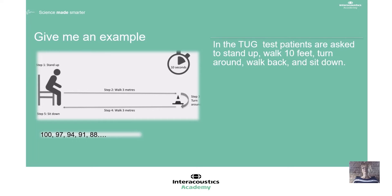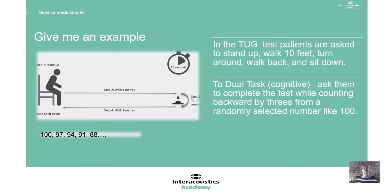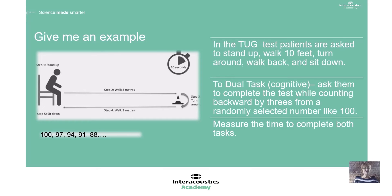Let me give you a quick example of what a dual task might be. In the TUG test — the Timed Up and Go test — the patient is asked to stand up, walk 10 feet, turn around, walk back, and sit down. If we wanted to turn that simple single task into a dual task, we could ask the patient to do the same thing — get up, walk 10 feet, turn around and come back — but this time count backwards by threes starting from 100: 100, 97, 94, 91. Then we time them, and we'll notice that the extra cognitive task makes it much more challenging.